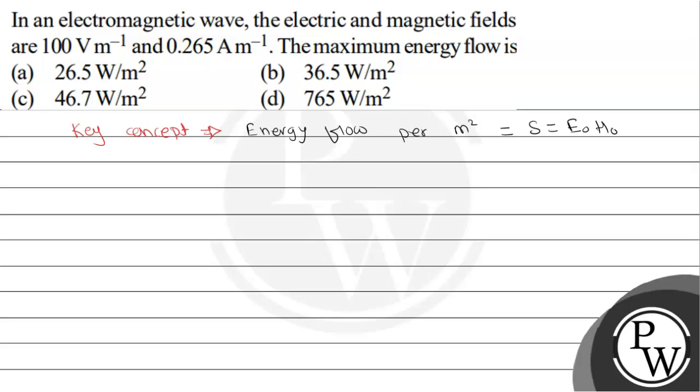So S equals E₀ times H₀. E₀, the electric field, is 100 volt per meter, and the magnetic field is 0.265 ampere per meter. The answer will be 26.5 watt per meter square.